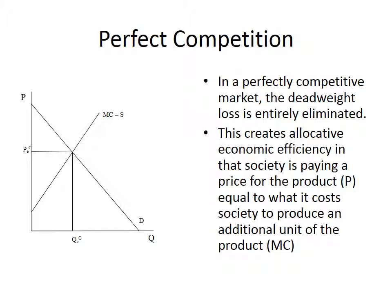Let's deal with perfect competition, which is the original model we looked at. The supply curve is the cost curve beyond the point where marginal cost and average total cost are the same. So the marginal cost curve and the supply curve are the same. Once we got into production functions, we talked about the relationship between the cost curve and supply curves.